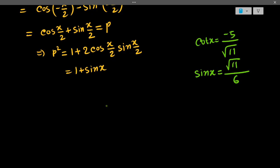If we put it here, let's put it here. So this will be 1 + √11/6. This is (6 + √11)/6. Now if we try to find the value of p, so p will equal the whole root of (6 + √11)/6.